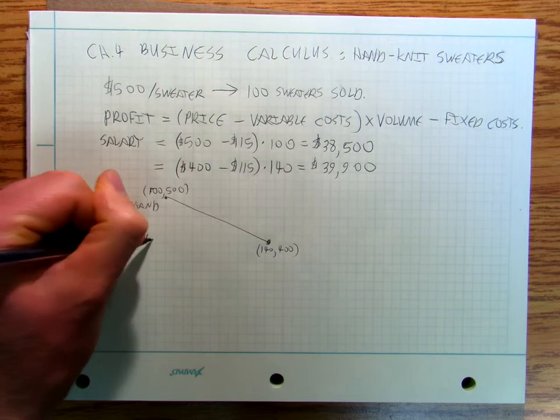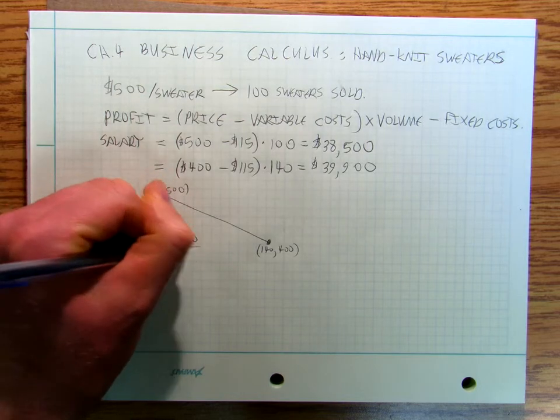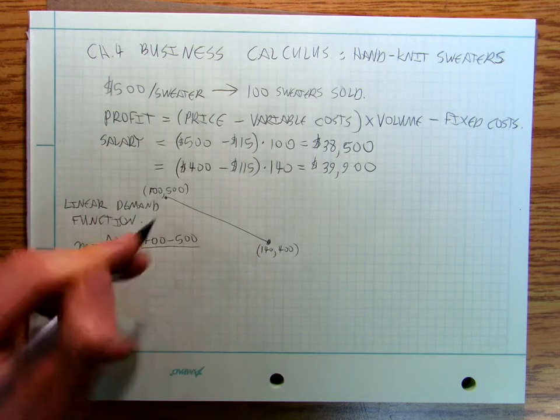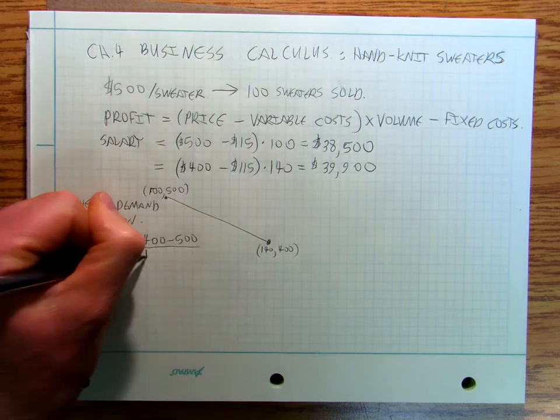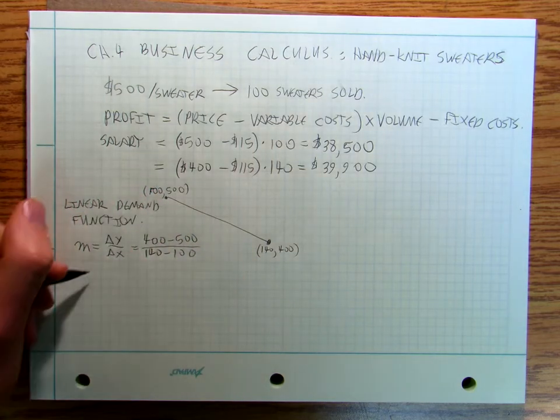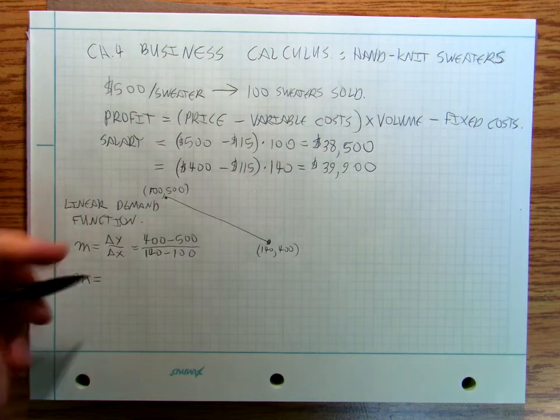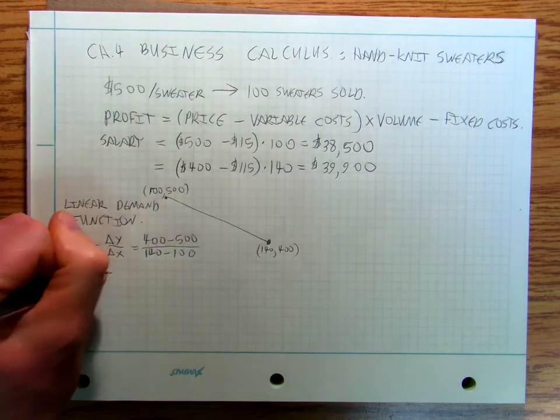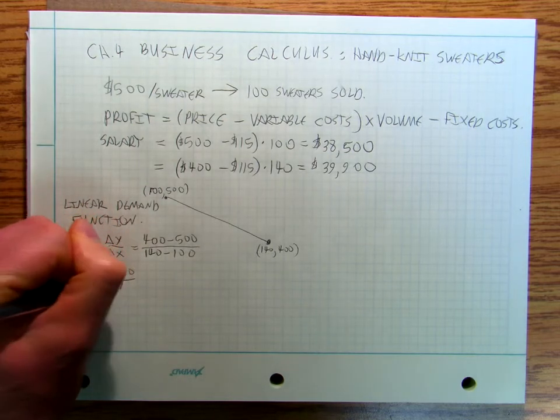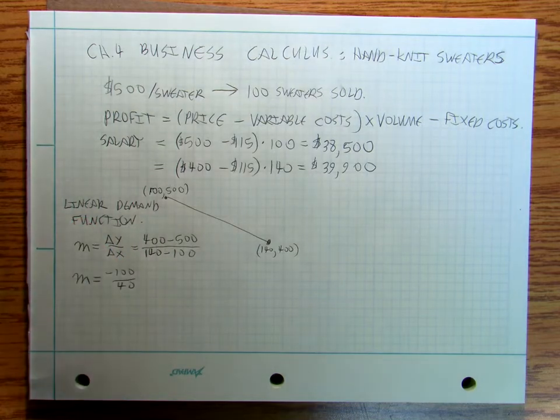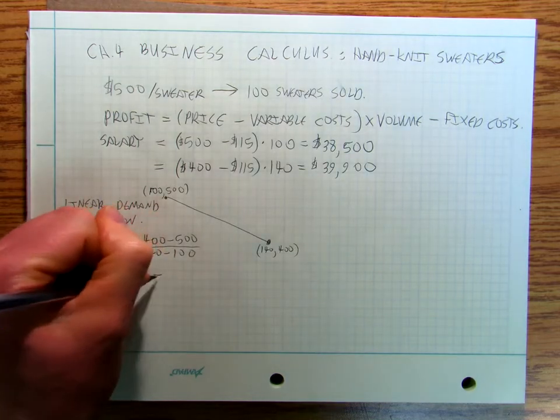So we're going to say well maybe I could sell 120 at $450, so I come up with this idea. My M is equal to change in Y over change in X, so it's going to be $400 minus $500 over 140 minus 100.